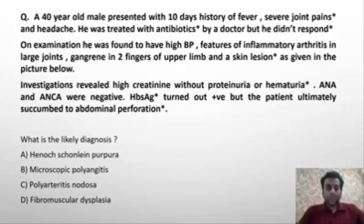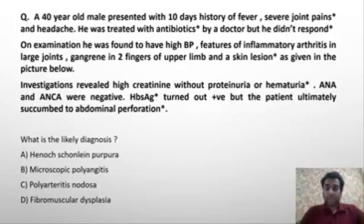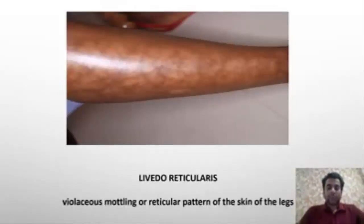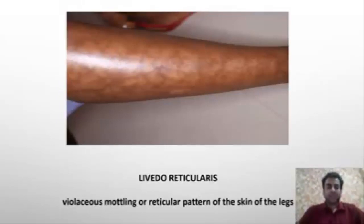This is a clinical vignette with a long clinical history, investigation findings, and examination findings. Three out of four options are names of vasculitis, so we are likely dealing with a vasculitis. The skin photograph clearly shows a violaceous reticular pattern over the skin of the legs — this is livido reticularis, as most of you correctly identified, also pointed out by our dermatology teacher Dr. Anupam.